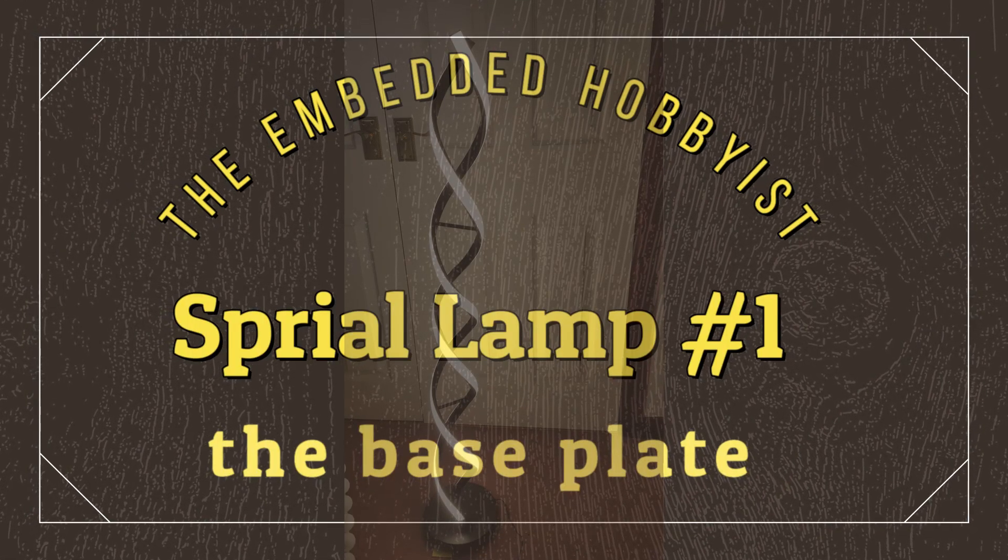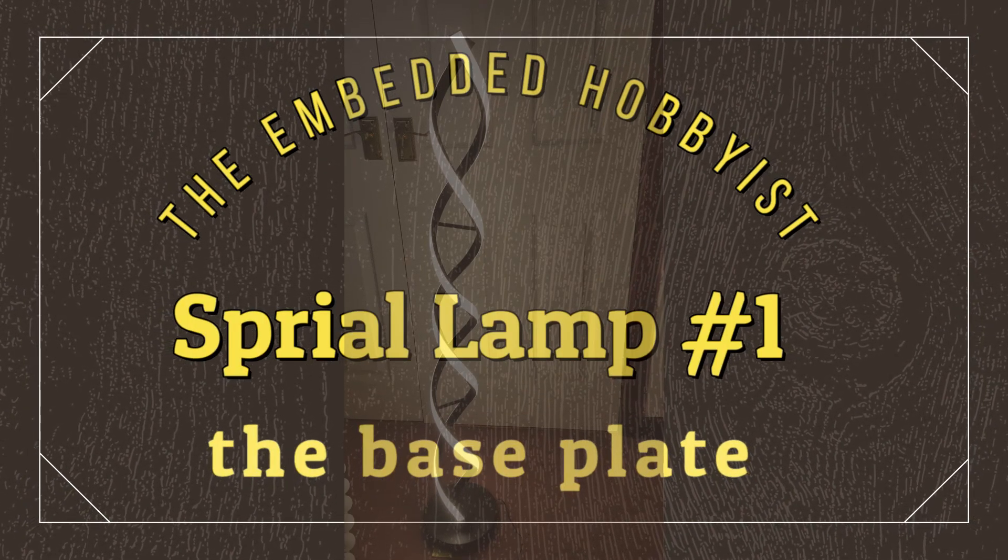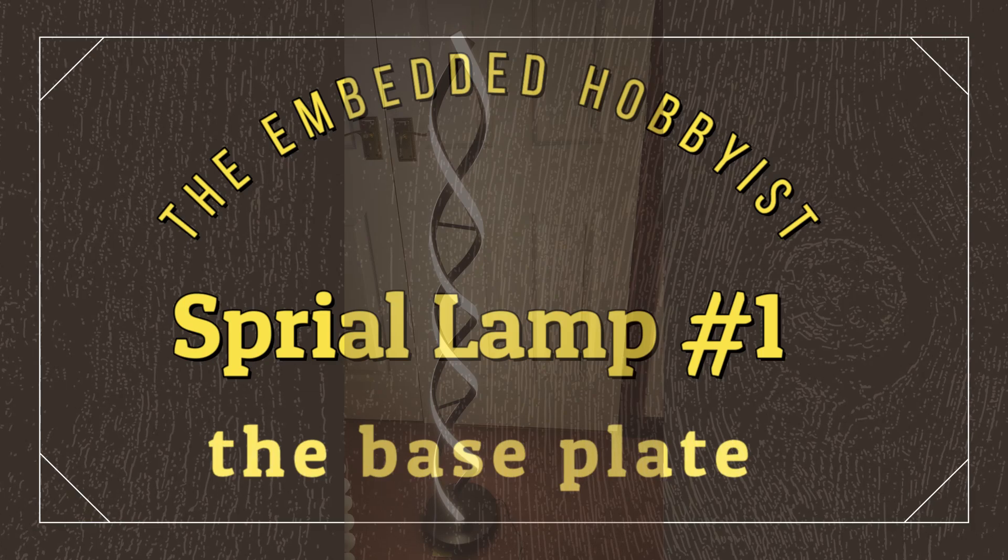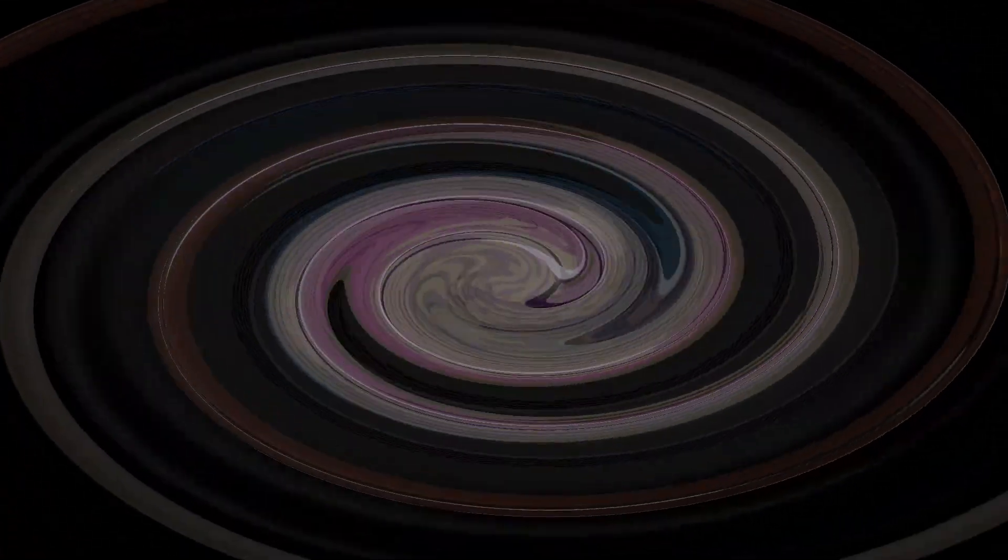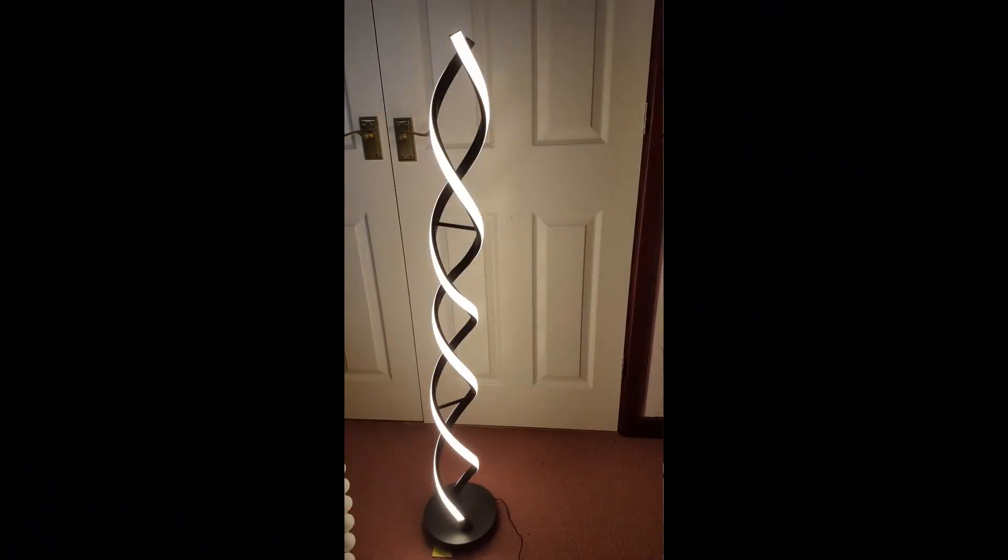Welcome back to my channel and the conversion of a static spiral lamp to a color changing effects lamp. In this video we look at the base plate. The lamp as it was, just a static warm white lamp. In this video we see how they assembled the lamp and possibly what I'm going to do with it.